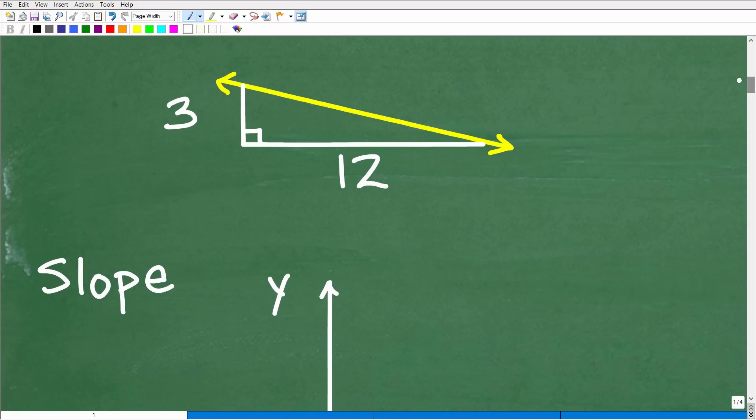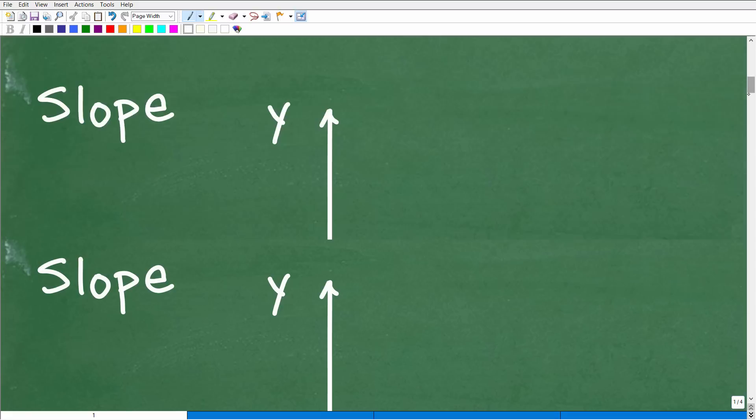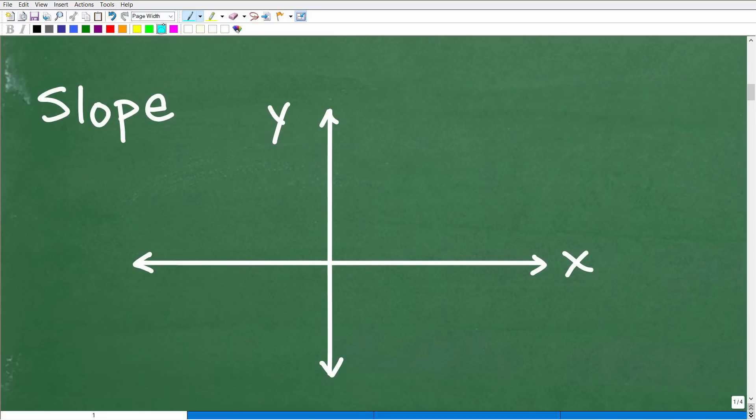So, again, the question is, what is the slope of this line? All right, so here's the line. We have some information about this line. But before we answer this question, let's just review some basic concept of the slope. Okay. So what is the slope of a line?